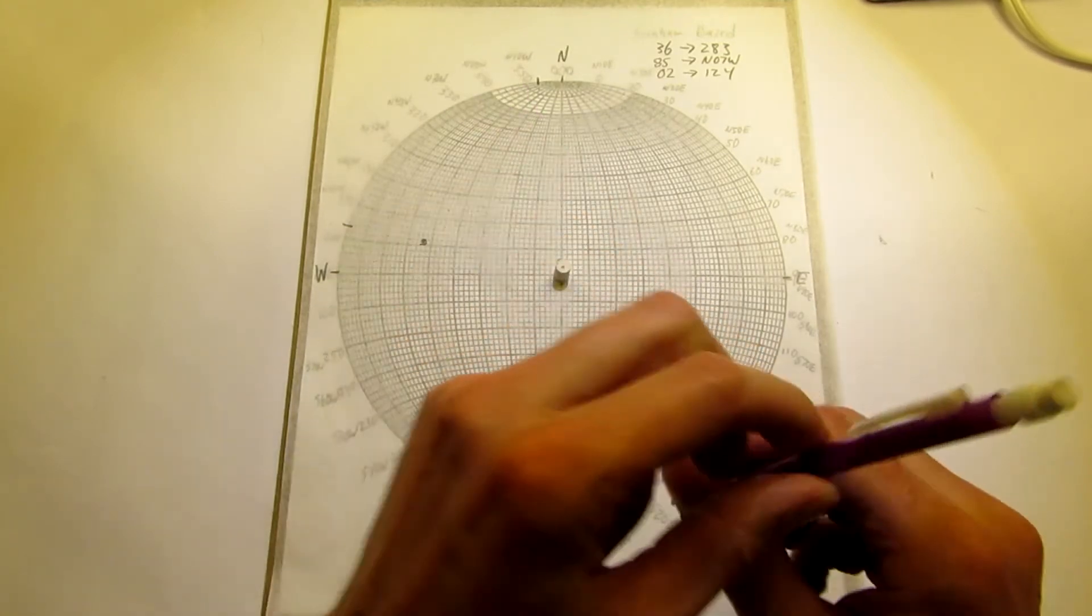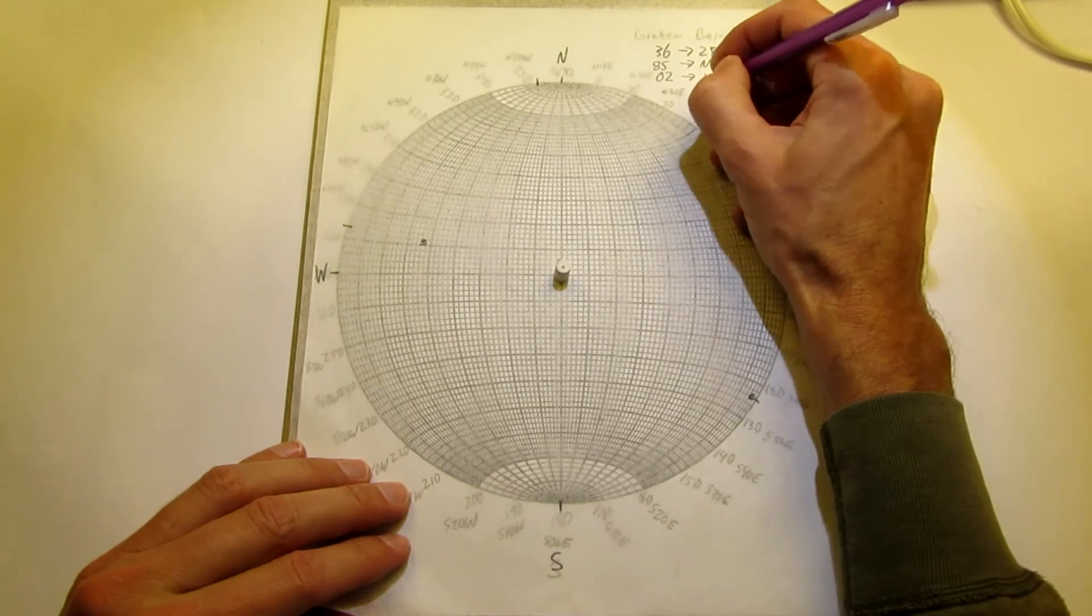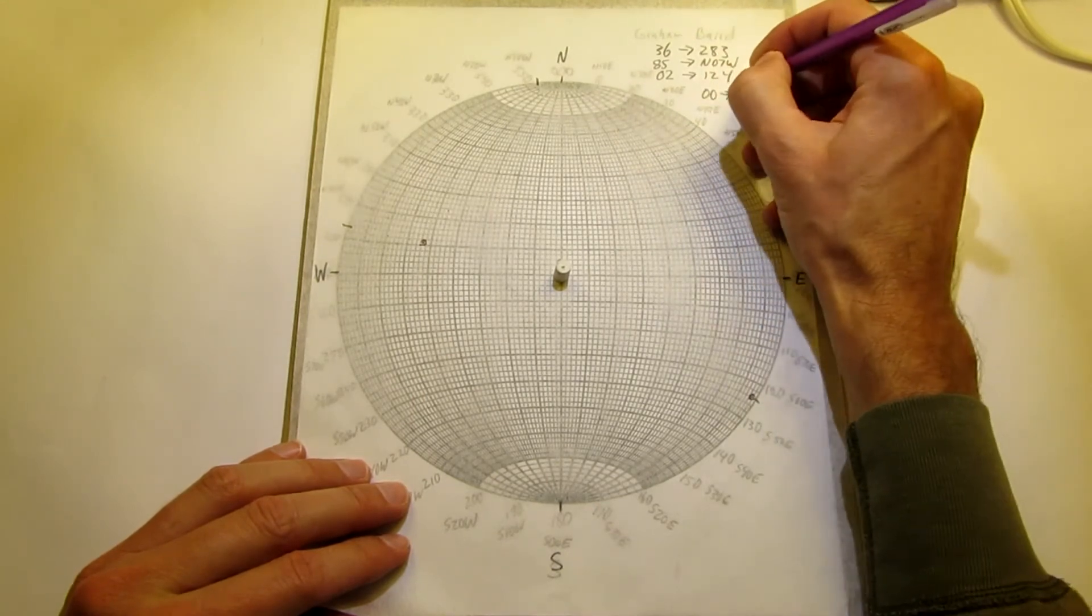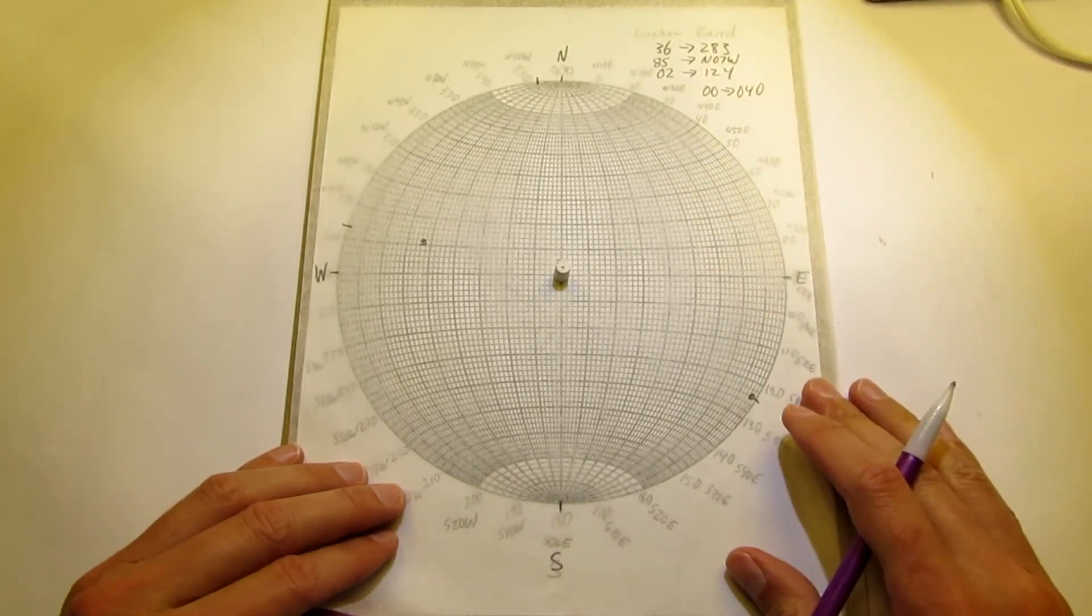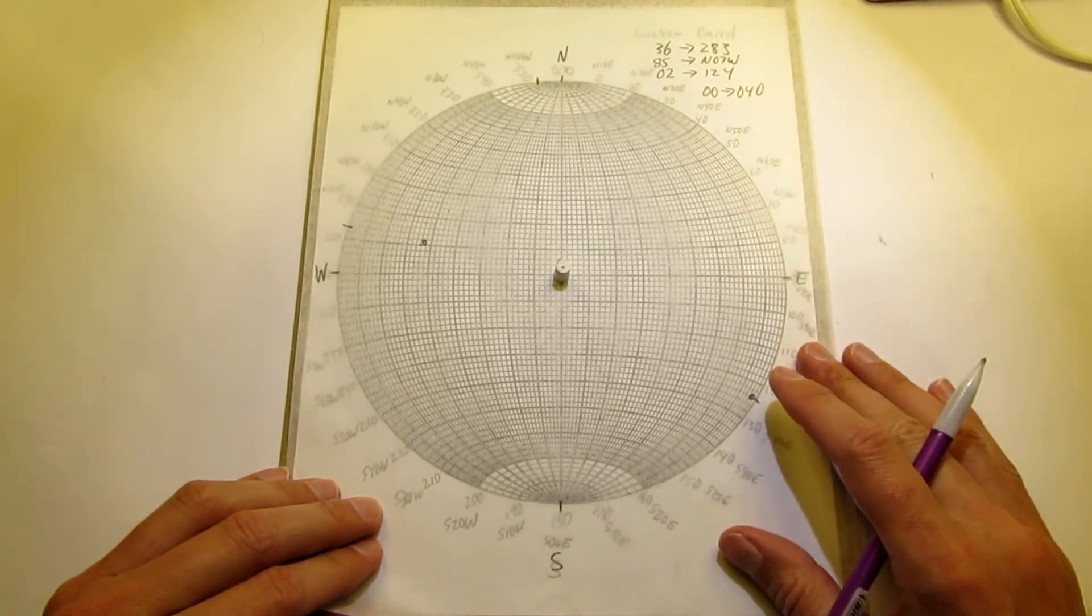And, in fact, let's do one more. Let's do 0, 0 towards 0, 4, 0. So that is a horizontal linear structure.